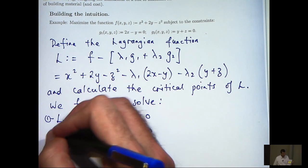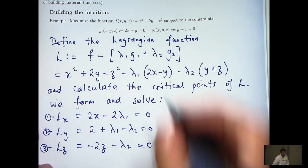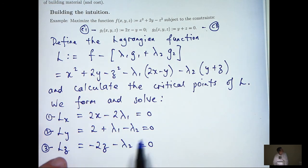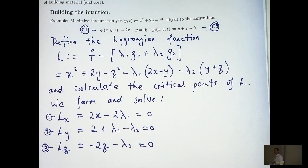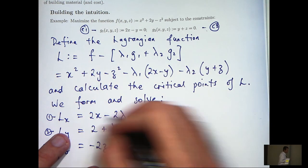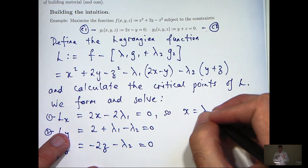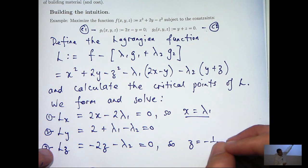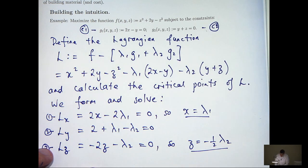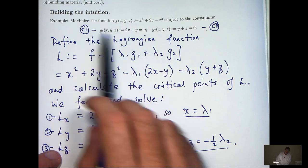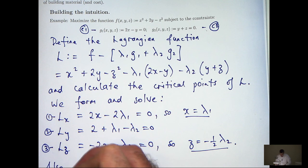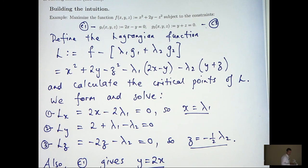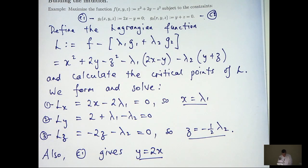I'm going to number these equations and refer back to them, numbering the constraints as C1 and C2. So what I would like to do is solve the five equations for x, y, z, λ1, and λ2. I can rearrange to get x equals λ1, and rearrange to get z equals minus one-half λ2. Then I can rearrange C1 to get y equals 2x. I'm trying to simplify everything to find x, y, z, λ1, and λ2.